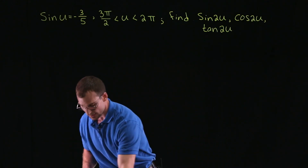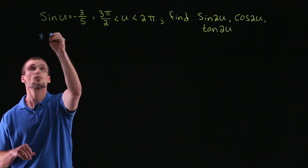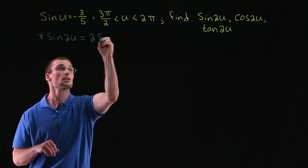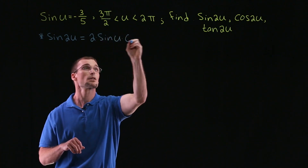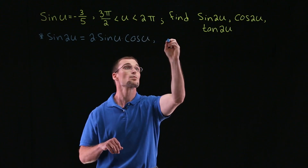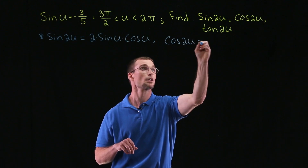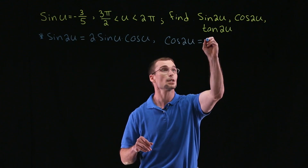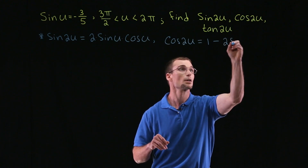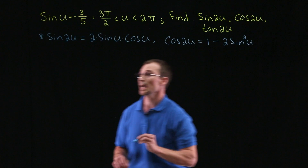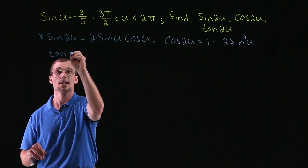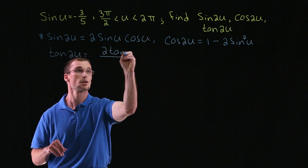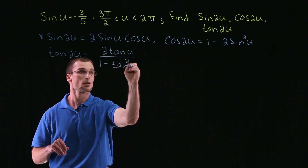Before we get started, let's take a look at those formulas. We know that the sine of two u is equal to two times the sine of u times cosine u. Cosine of two u actually has three separate variations, but looking at what we're given — since we're given the sine of u — the easiest one to implement would be cosine of two u equal to one minus two sine squared u. And we have the tangent of two u equal to two tangent u divided by one minus tangent squared of u.